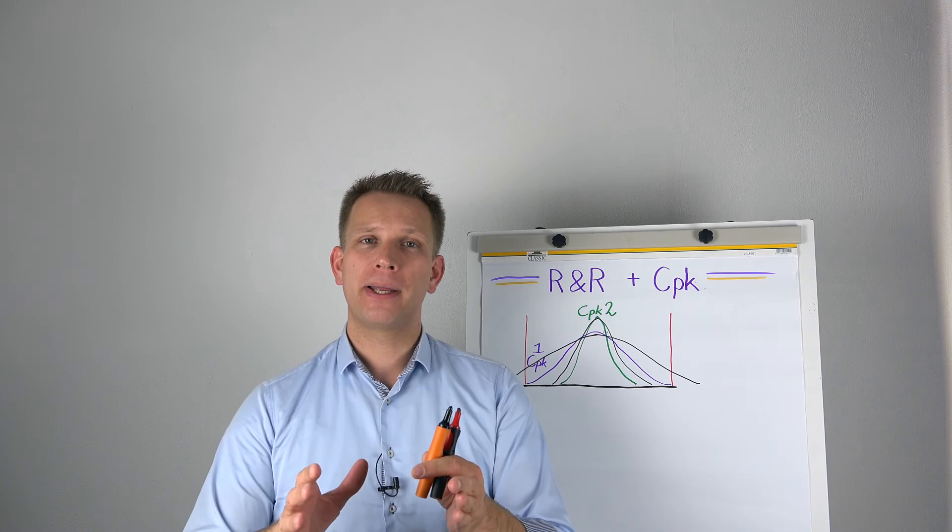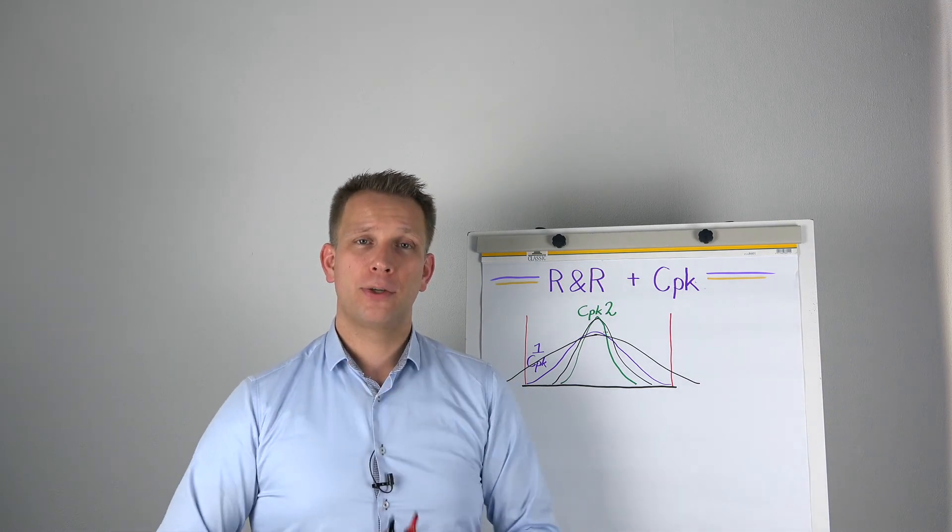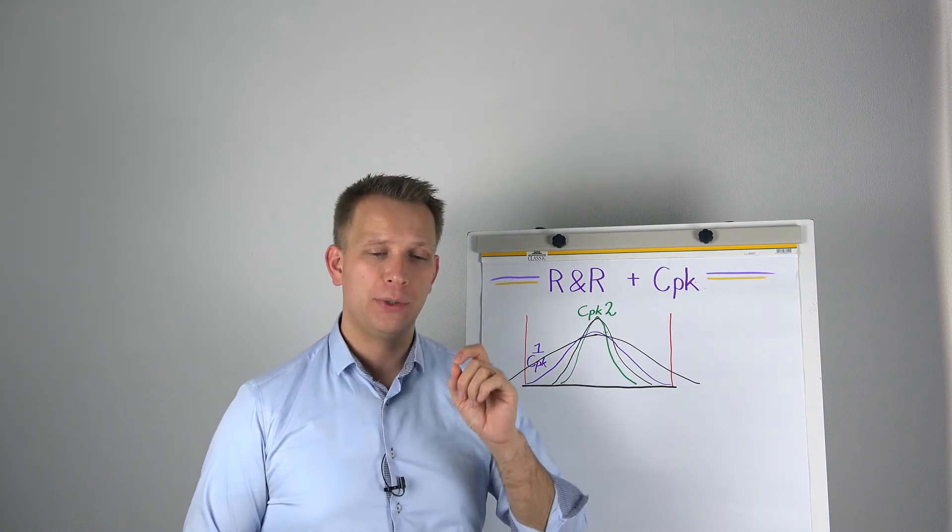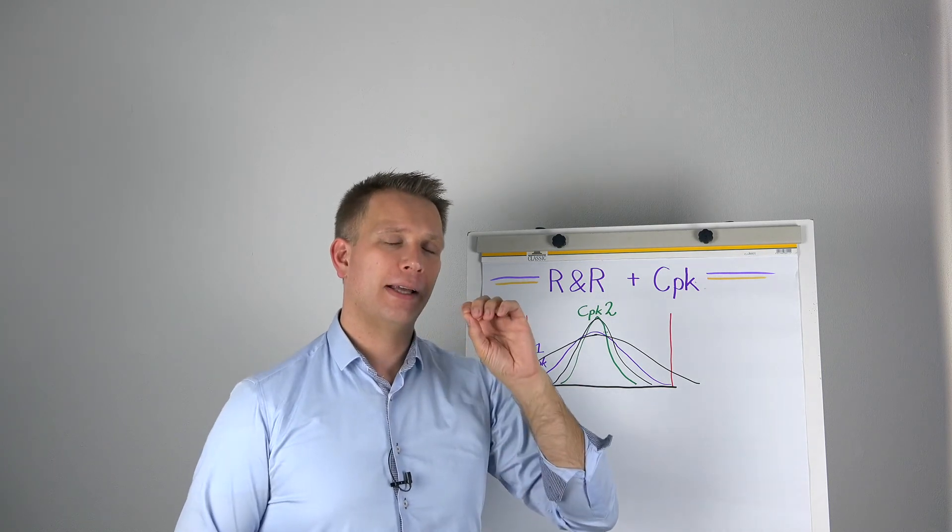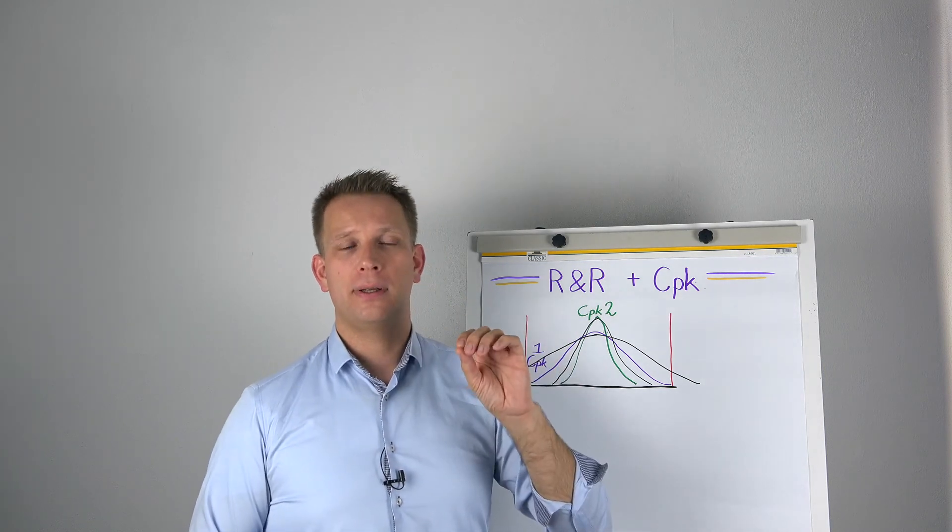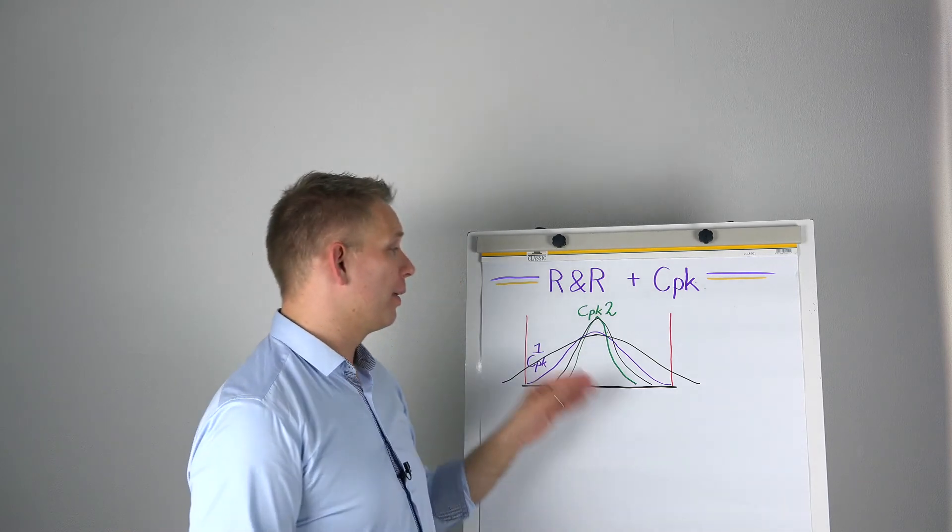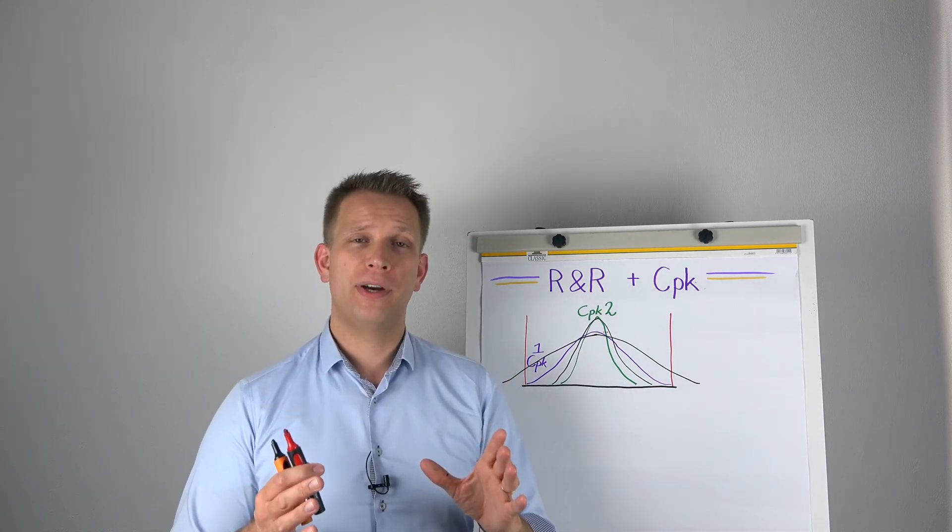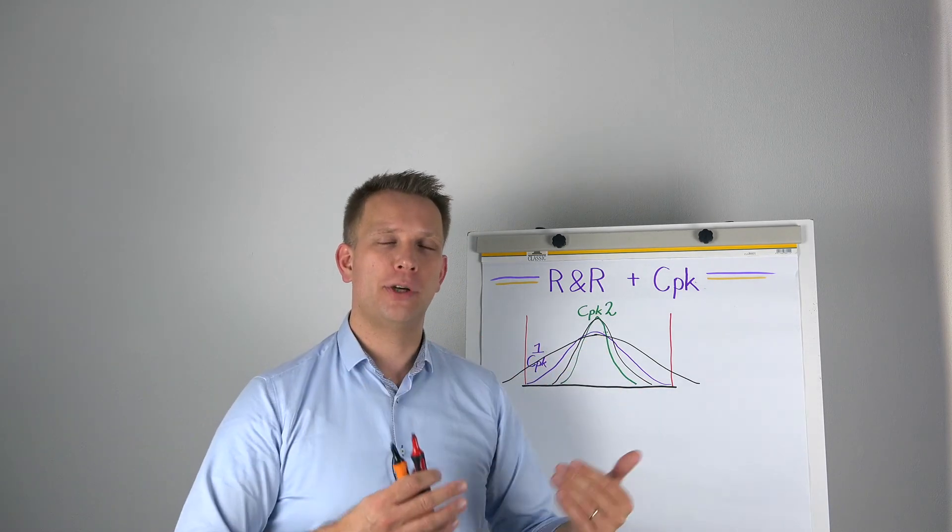I don't think that that difference is important enough to really go and nitpick the CPK. So, that is my advice to anyone doing the R&R. Make sure that you compare the extra variation due to the measurement system, both to the observed variance and the tolerance limits.